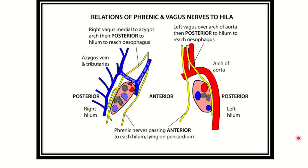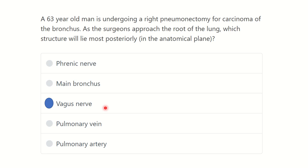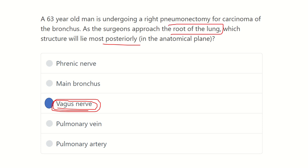Here the phrenic nerve is shown anteriorly and posteriorly there is the vagus nerve, here seen with its relation to the azygos spine. So our answer is now ready: the vagus nerve lies most posteriorly at the root of the lung, or at the hilum of the lung. Thank you.